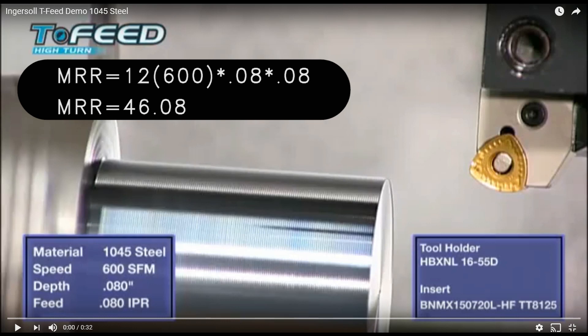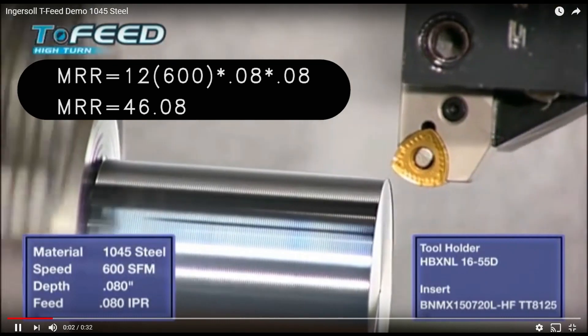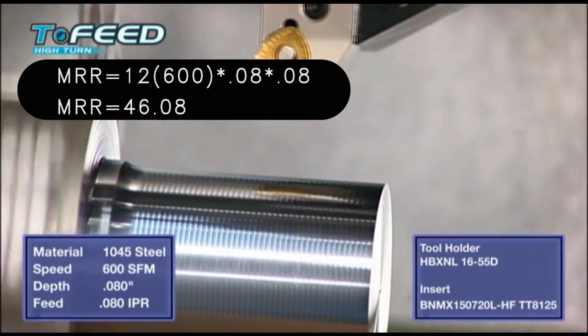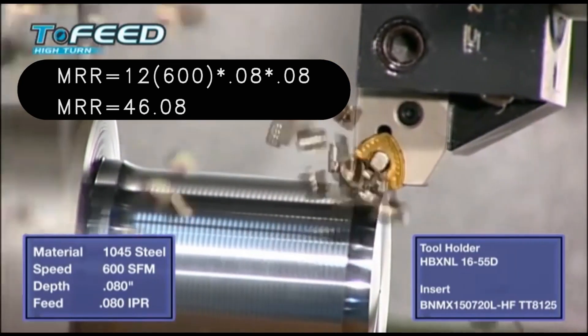All right, now this last one, it is really going to be kicking ass. It's got a metal removal rate of 46.08. It's got a lower depth of cut, so it's got a smaller chip, and that's able to feed faster due to that.